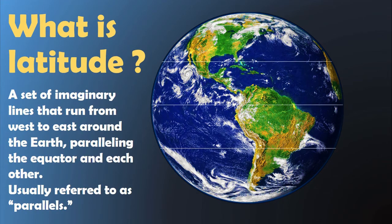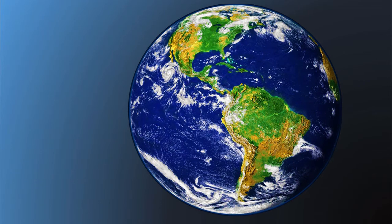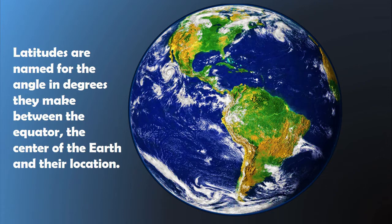Latitude or parallels are set of imaginary lines that run from west to east around the Earth, paralleling the equator and each other. Latitudes are named for the angle in degrees they make between the equator, the center of the Earth, and their location.